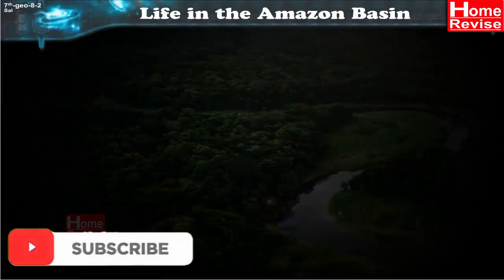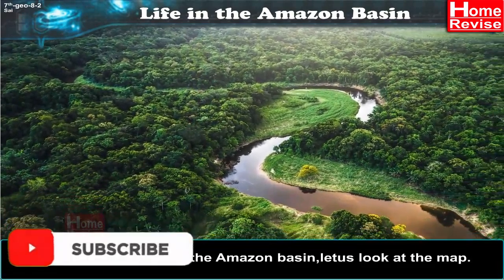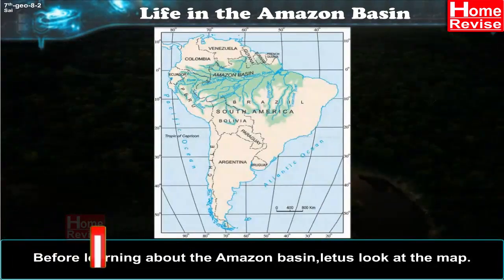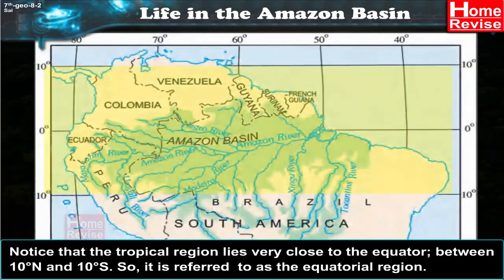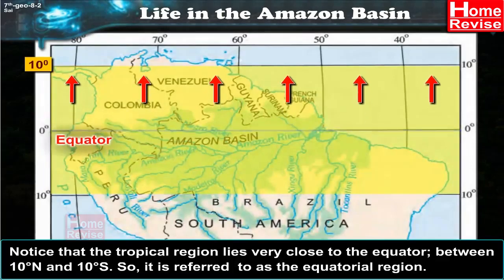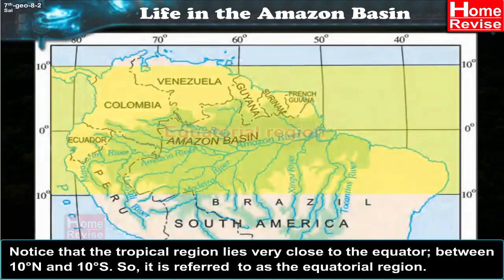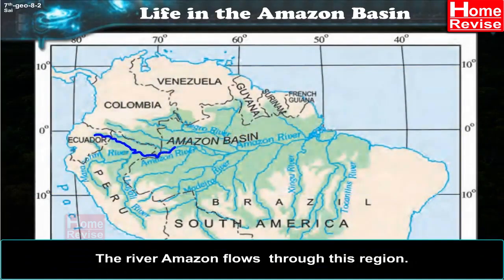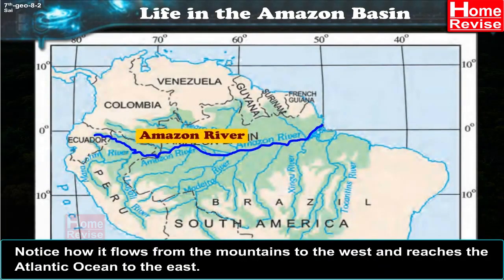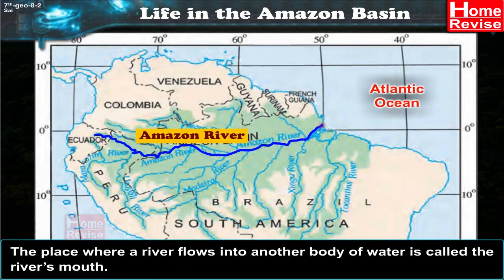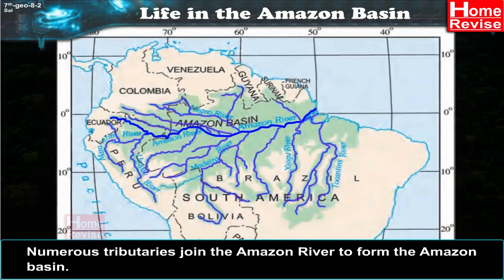Life in the Amazon Basin. Before learning about the Amazon Basin, let us look at the map. Notice that the tropical region lies very close to the equator, between 10 degrees north and 10 degrees south, so it is referred to as the equatorial region. The river Amazon flows through this region. Notice how it flows from the mountains to the west and reaches the Atlantic Ocean to the east. The place where a river flows into another body of water is called the river's mouth.